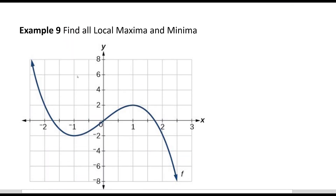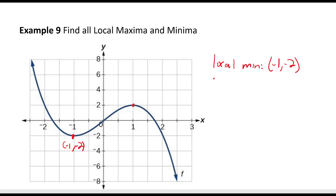For the next problem, find all local maxima and minima. Looking at the graph, there's a low point and a high point. We have a local minimum at (-1, -2) and a local maximum at (1, 2).